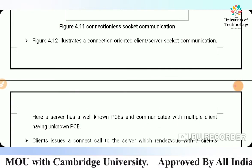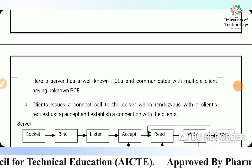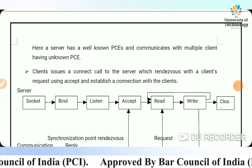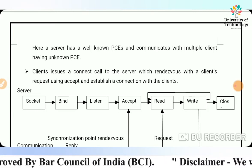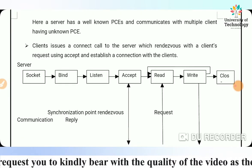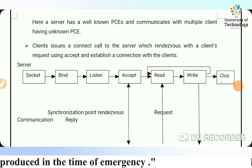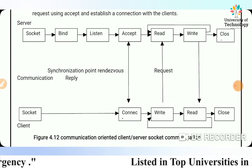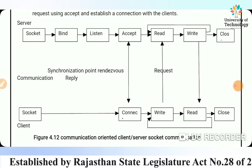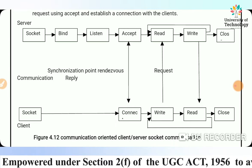Connection-oriented client-server socket communication works as follows: a server has a well-known PCE and communicates with multiple clients having unknown PCEs. Clients issue a connect call to the server, which rendezvous with the client's request using an accept call and establishes a connection. The server flow is: socket, bind, listen, accept, read, write, close; and the client flow is: socket, connect, write, read, close.